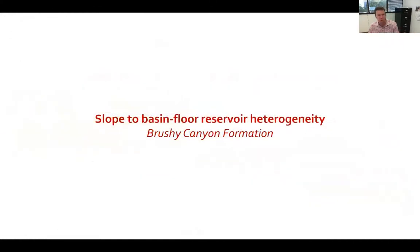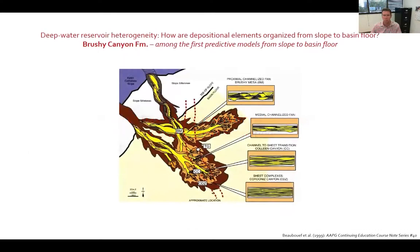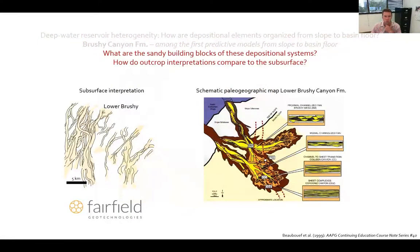So now on to our study, leveraging Fairfield subsurface data of the slope to basin floor reservoir heterogeneity of clastic units in the Permian Basin. We're going to use the Brushy Canyon formation as an analog for other clastic basin floor reservoirs within the Permian Basin to try to understand how depositional elements are organized from slope to basin floor. We're also interested in trying to use the Fairfield subsurface data, the 3D seismic that I mentioned before, to define the architectural elements in the subsurface.